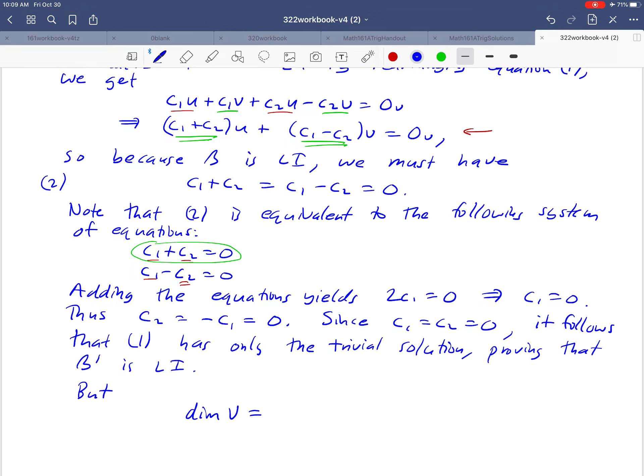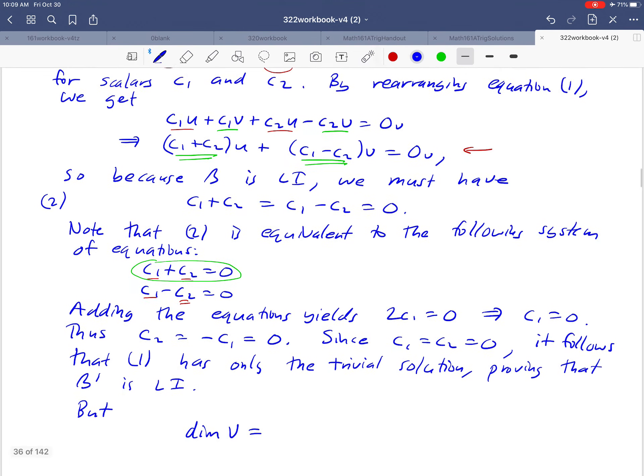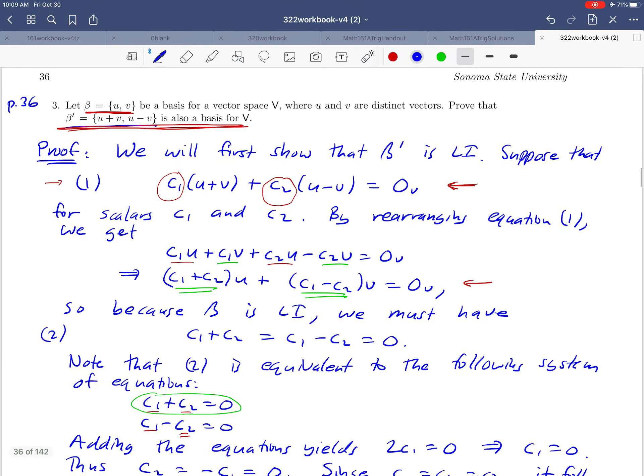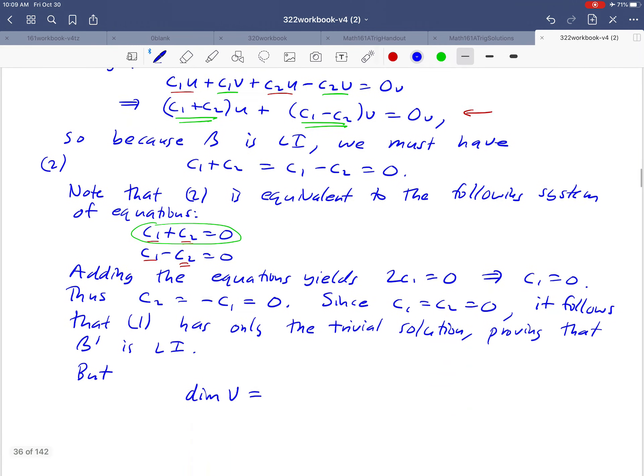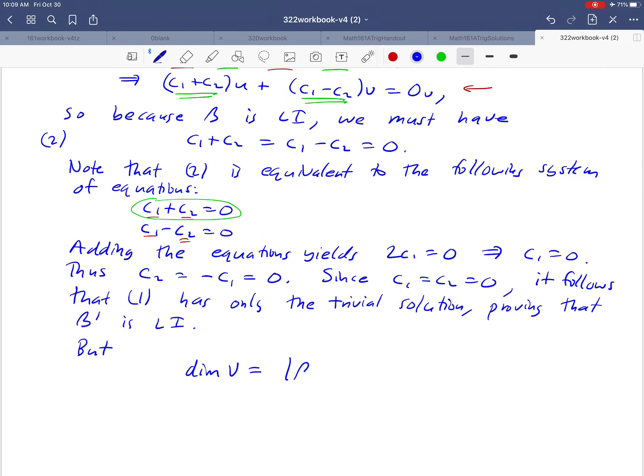The dimension of V—do we know what it is? In the statement of the problem, they told us that β = {u, v} is a basis. That has two vectors in it, so the dimension is two. The notation with two bars like an absolute value just means number of elements in the set β—it has two elements.